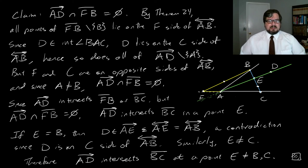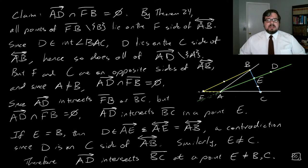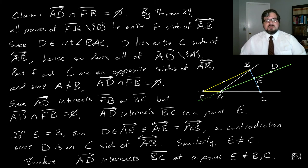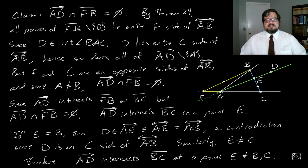Wrapping up the crossbar theorem: since ray AD intersects segment FB or BC, but ray AD does not intersect segment FB, the ray AD must intersect segment BC at some point E. Finally, if E equaled B, then D would lie on line AB, contradicting that D is on the C side of AB. Similarly E does not equal C. Therefore ray AD intersects segment BC at an interior point, completing the proof. The crossbar theorem is very useful but requires a substantial argument.